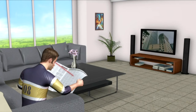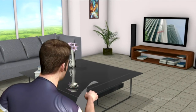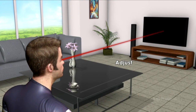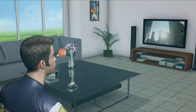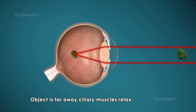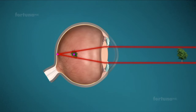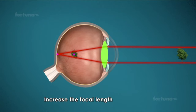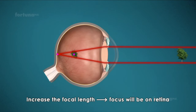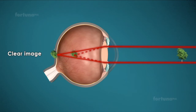But what happens when distances between the eye and the object vary? Your eye can actually adjust its lens according to an object's distance. When the object is far away, ciliary muscles will relax, causing the lens to become thinner. This thinning of the lens will increase the focal length, and the focus will be on the retina, allowing a clear image of the object to form.